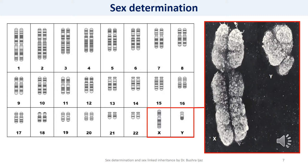There are other sex determination systems in nature as well. For example, temperature-dependent sex determination is relatively common. Some species such as snails practice sex change — an adult starts out male then becomes female. In tropical clownfish, the dominant individual in a group becomes female while all others remain male. This figure shows a human male karyotype: a human male possesses an X and a Y chromosome, with the Y chromosome being much shorter than the X chromosome, unlike all other homologous chromosome pairs.